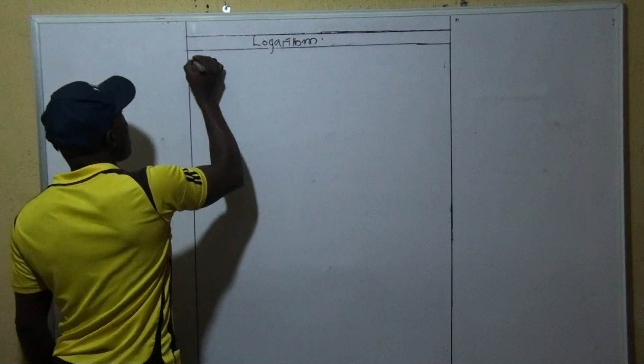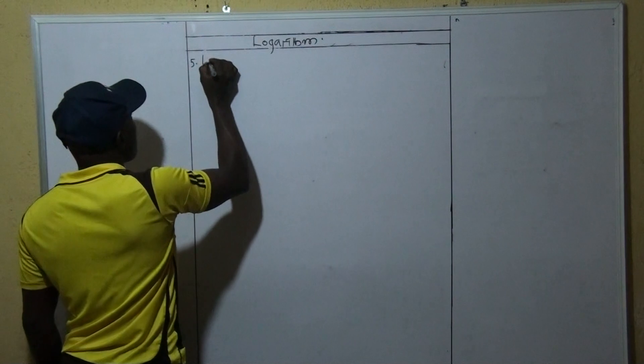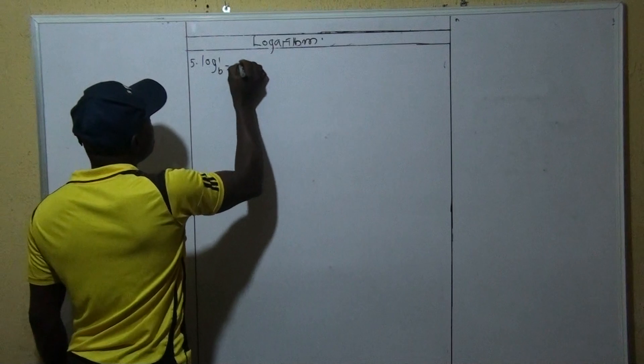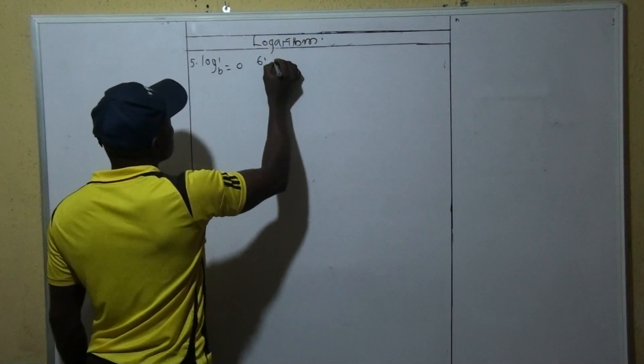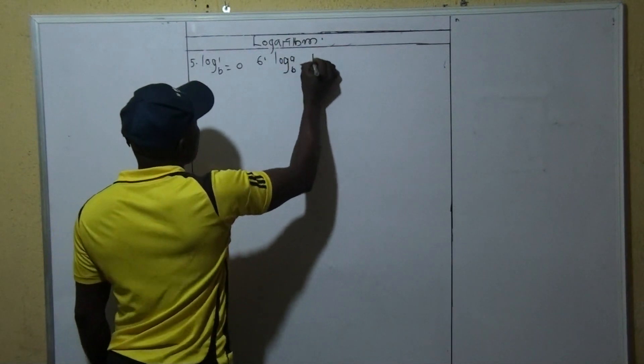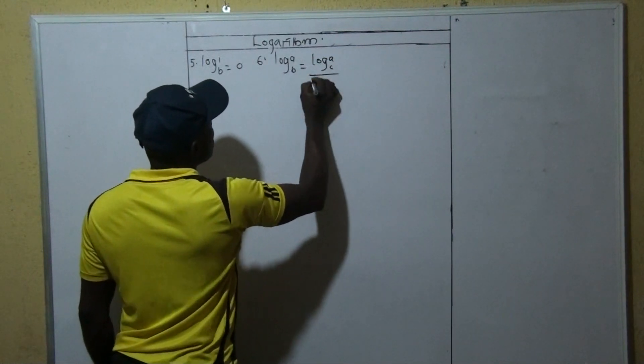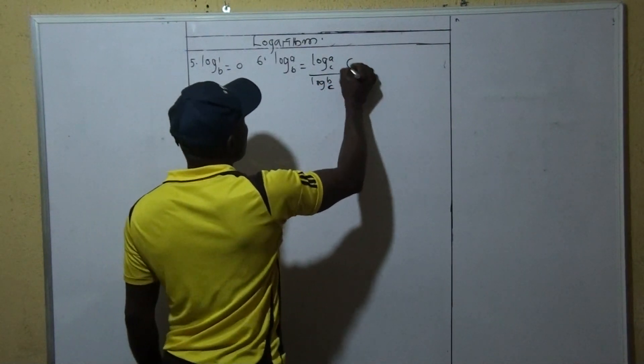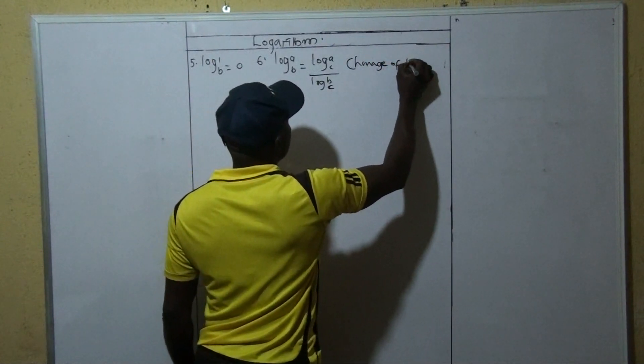That is one of the importance of logarithm. So in this class we are going to continue from where we stopped. We stopped at the fourth law, so we're going to look at the fifth law. We say that we have log 1 to base B is equal to zero. And six, also we'll look at this: log A to base B equals log A to base C over log B to base C.